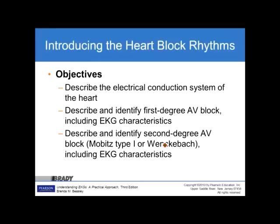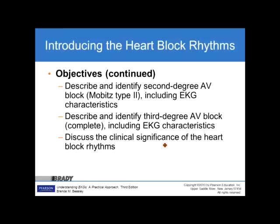Objectives: Describe the electrical conduction system of the heart. Describe and identify a first degree AV block, including EKG characteristics. Describe and identify a second degree AV block Mobitz type 1, or Wenckebach block, including EKG characteristics. Describe and identify a second degree AV block Mobitz type 2, including EKG characteristics. Describe and identify a third degree AV block, or complete heart block, including EKG characteristics. And discuss the clinical significance of heart block rhythms.